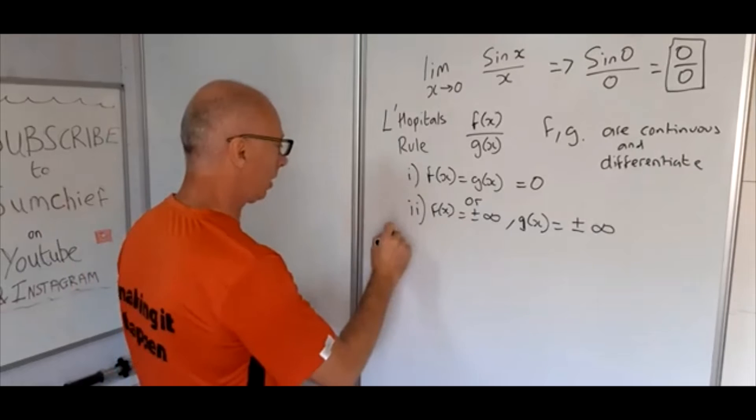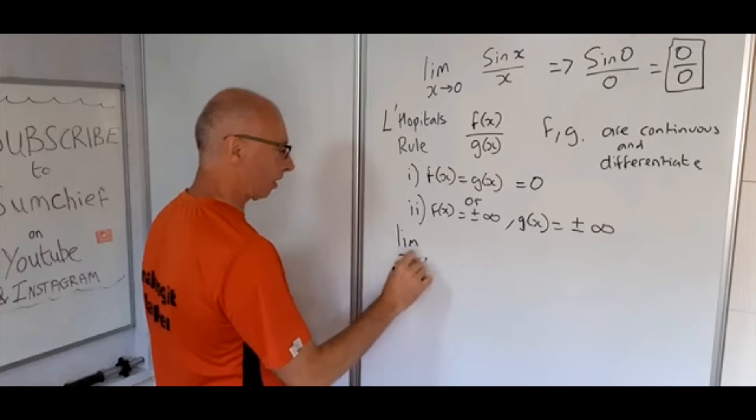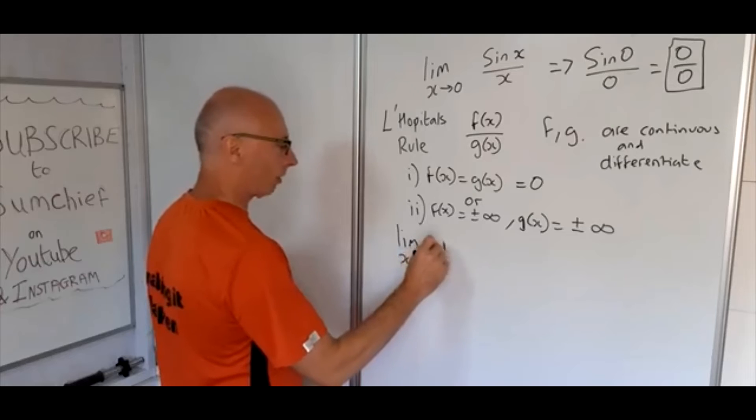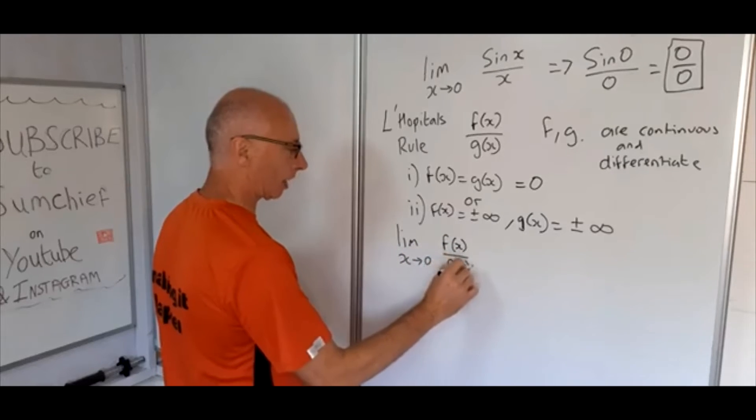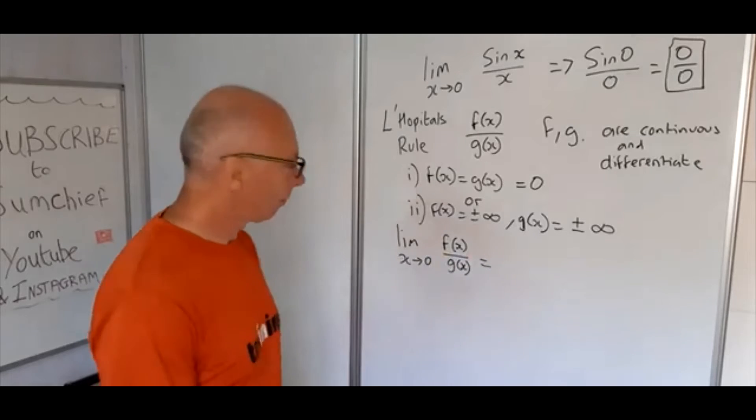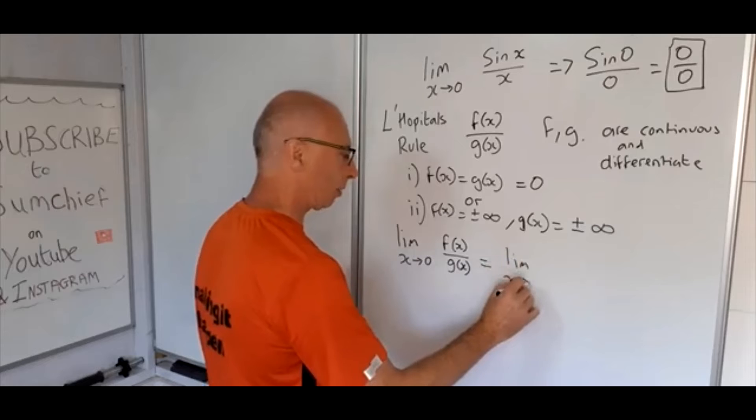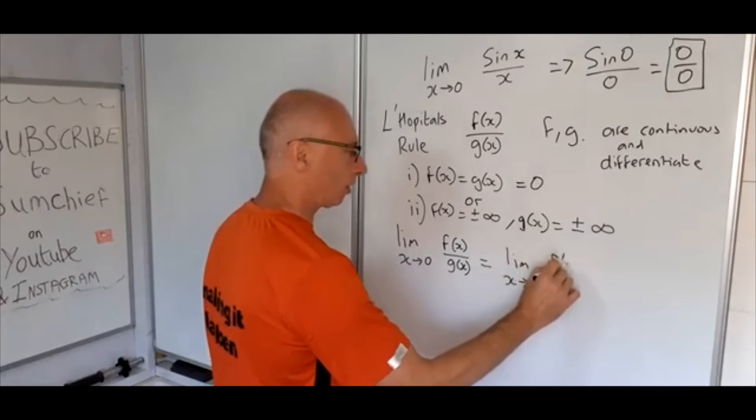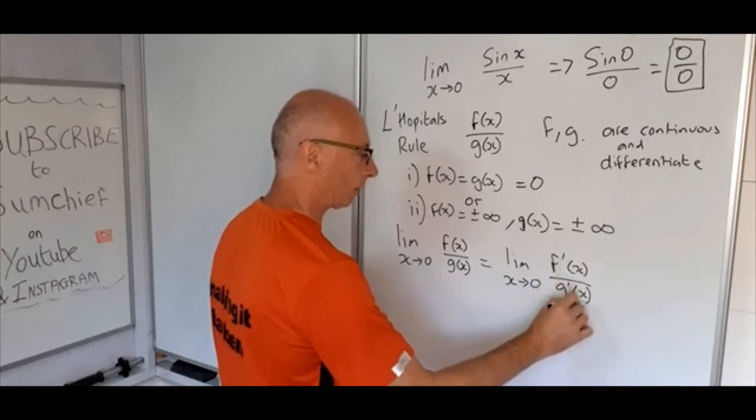So what we need now when we have this situation, the limit as x approaches zero of f of x over g of x, this equals the limit as x approaches zero of the derivative of f of x over the derivative of g of x.